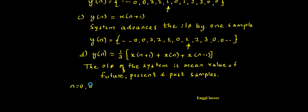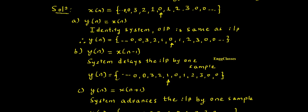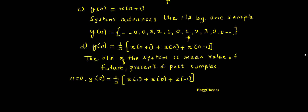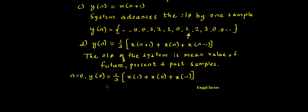To find y(0): y(0) = 1/3 * [x(1) + x(0) + x(-1)]. Checking the values: x(0) = 0, x(-1) = 1, x(1) = 1. So y(0) = 1/3 * (1 + 0 + 1) = 2/3.